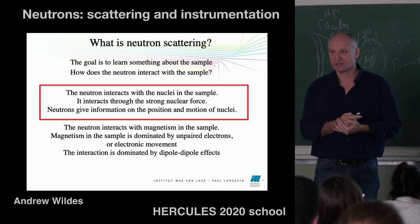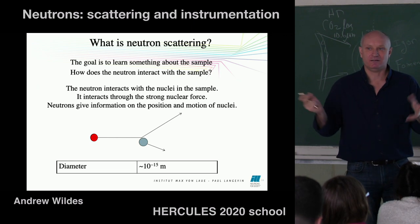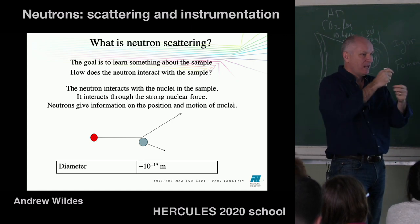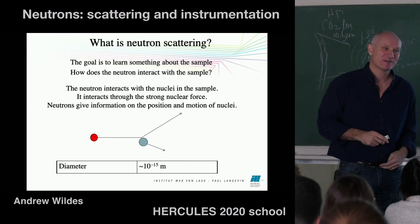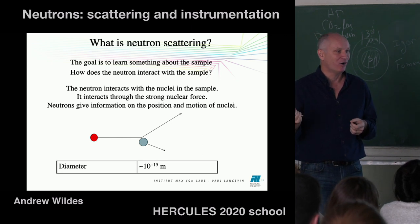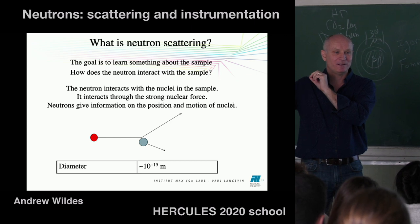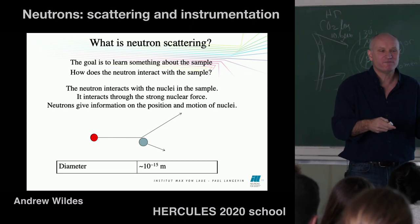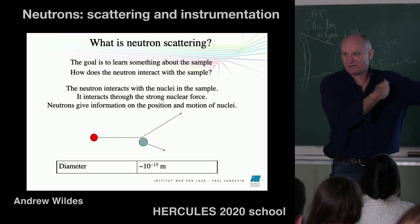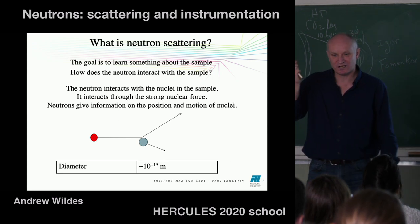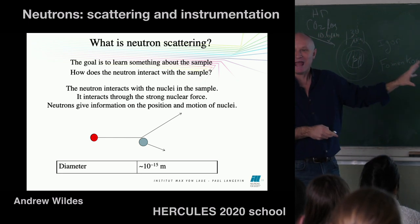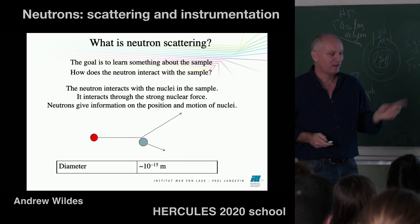Naively you might think of it as a billiard table — neutrons coming in and hitting nuclei. But if you think about it, that's highly unlikely. The neutron is about 10⁻¹⁵ meters, and so is the nucleus. Most of your sample is electron probability distribution — the size of an atom is five orders of magnitude larger. The probability that an object of 10⁻¹⁵ meters interacts with another of the same size is incredibly small. So how can the neutron interact with the nucleus? For that, we must go to quantum physics.